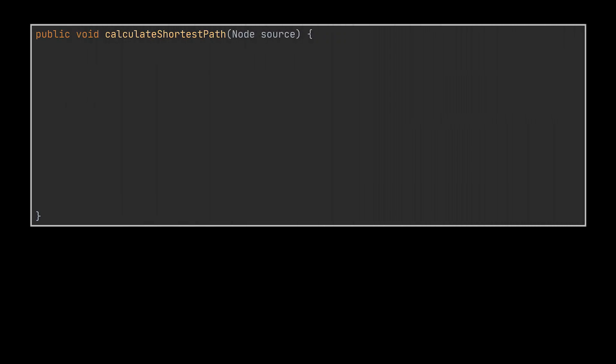On to the Dijkstra algorithm implementation. The first thing we previously did and are going to do now is set the distance of the source node we picked to zero. Next we are going to create the settled and unsettled sets we talked about. The unsettled set will actually be the priority queue and the source node will be added to it right from the start.